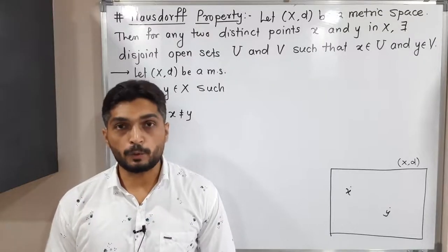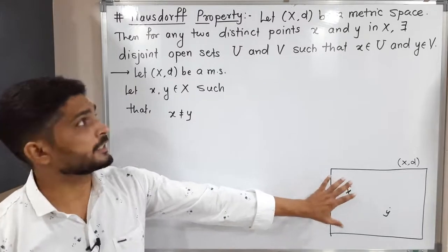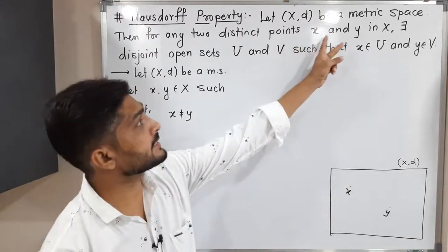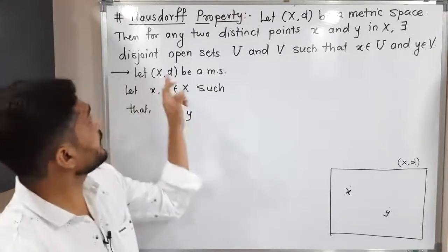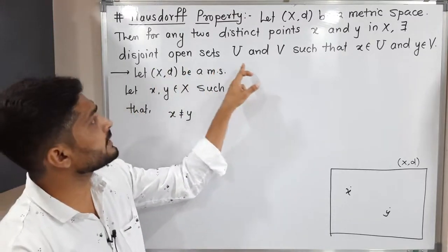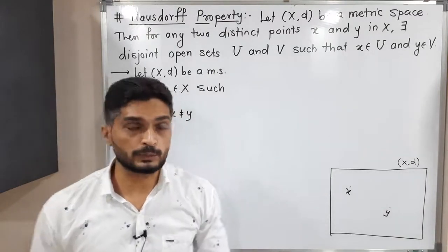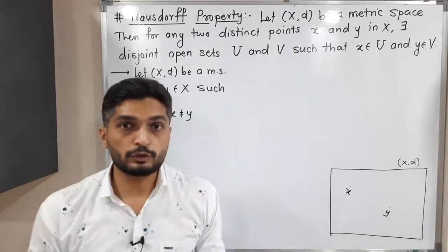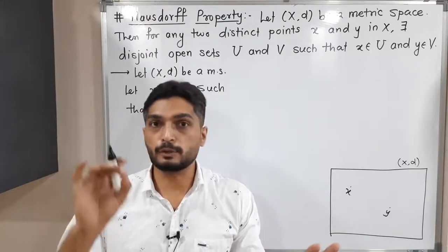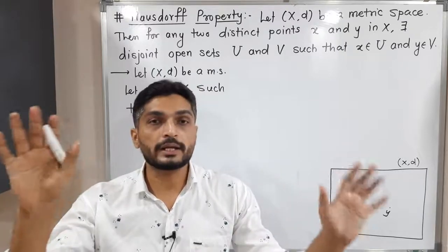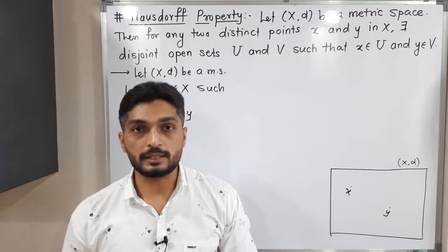Let us discuss the Hausdorff property. This property states: if you have a metric space (X, d) and two distinct points x and y — that is, x ≠ y — then there exist disjoint open sets U and V such that x belongs to U and y belongs to V. If two points are distinct, you can find two open sets U and V with x ∈ U, y ∈ V, and U ∩ V = ∅. Let us prove this.